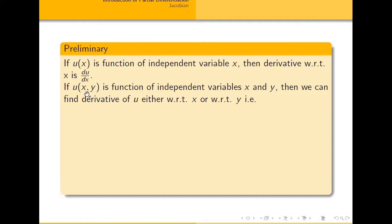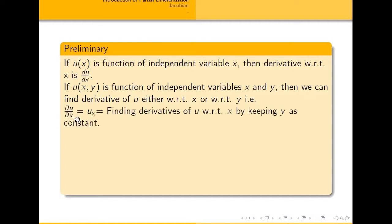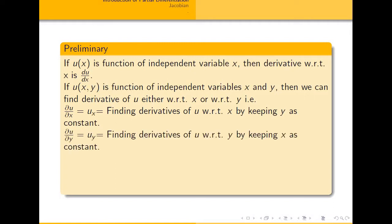Therefore, we find the partial derivative of u with respect to x, or the partial derivative of u with respect to y, denoted by ∂u/∂x and ∂u/∂y (also written as u_x and u_y). The partial derivative ∂u/∂x means differentiating u with respect to x treating all other variables as constants. Similarly, ∂u/∂y means differentiating u with respect to y keeping x as constant.